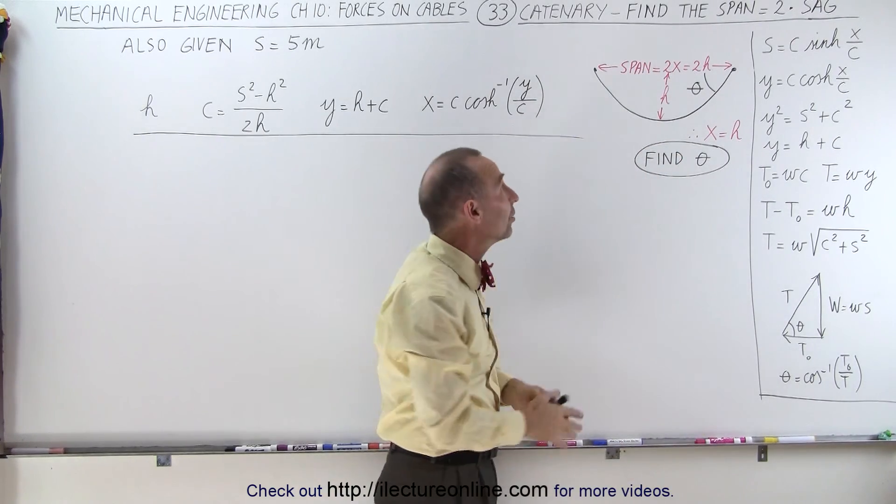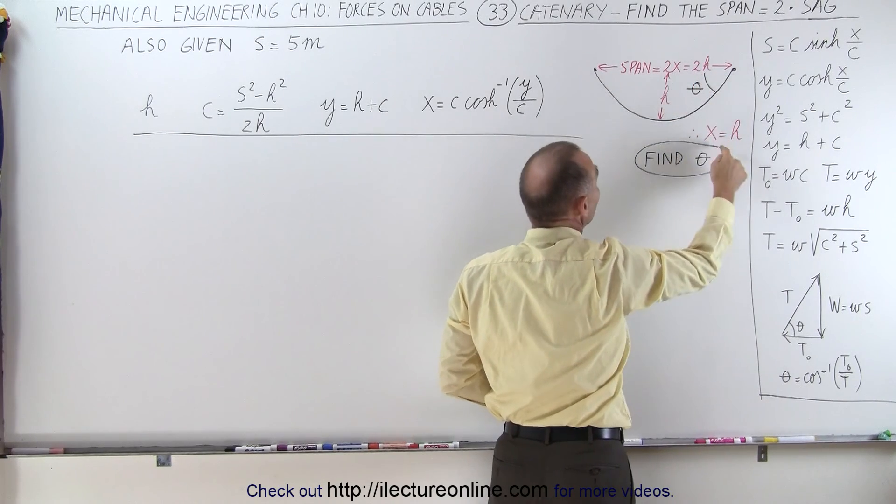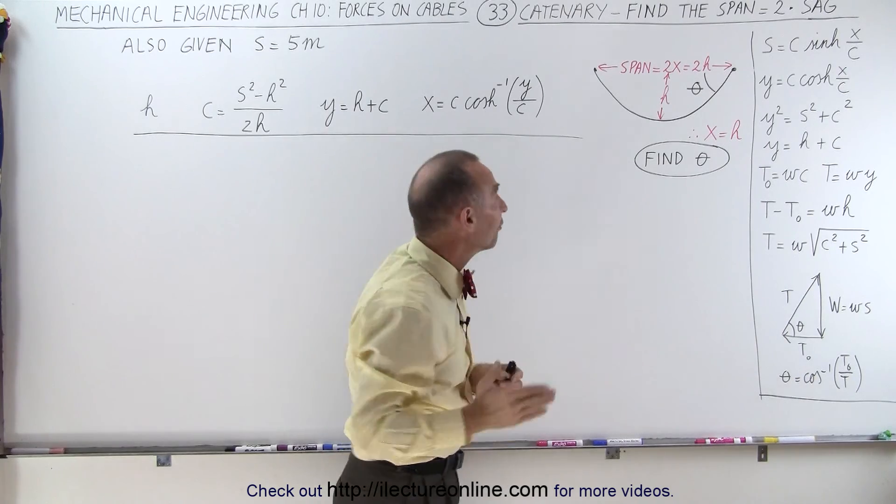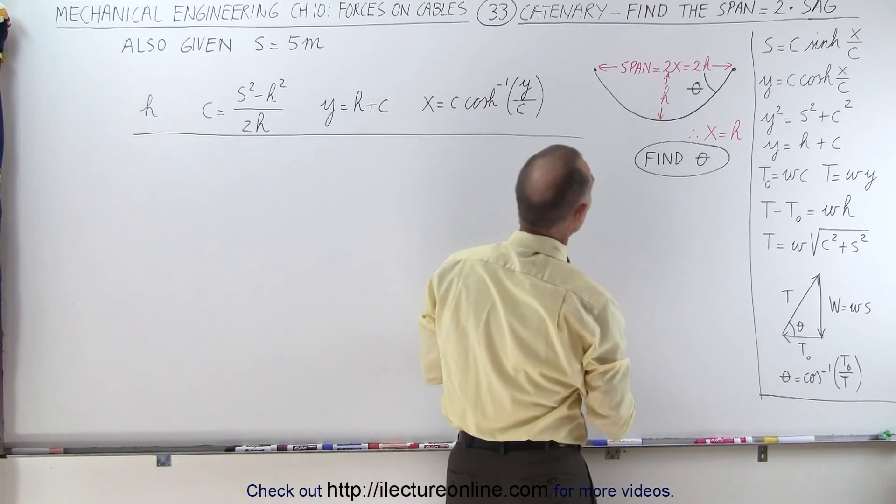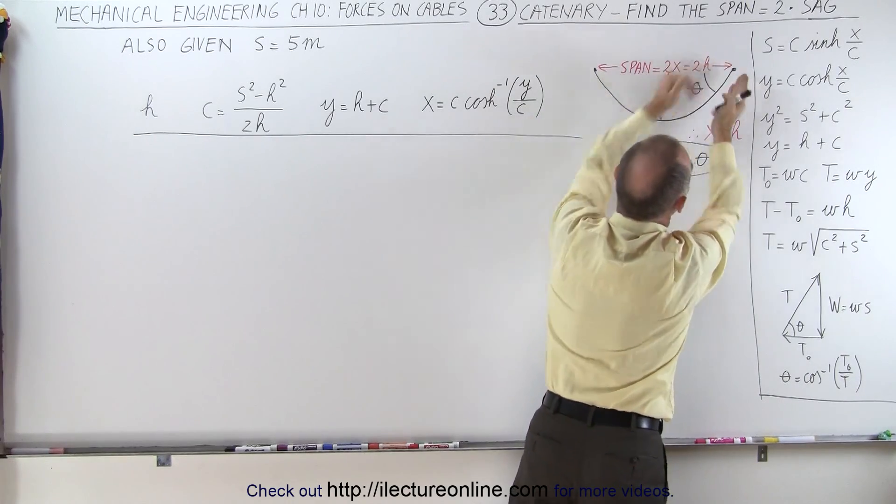Since the span is equal to twice x, and that has to equal twice h, that means that x must equal h. And ultimately they want us to find the angle between the horizontal and the attached point, the cable, this angle right here, theta.